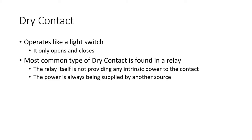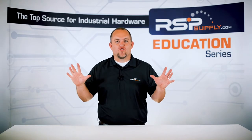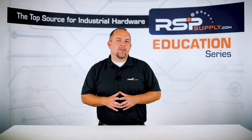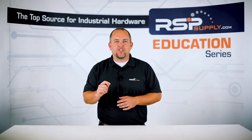One of the most common use cases of this type of contact is found in a relay. Relays have a coil that, when energized, will open or close a set of contacts. When the contacts are closed, power can flow through them to whatever source the power is intended for. But the relay itself is not providing any intrinsic power to the contacts — the power is always being supplied by another source. This is a dry contact, and they are used all over the place, especially in areas where control and automation are being used.